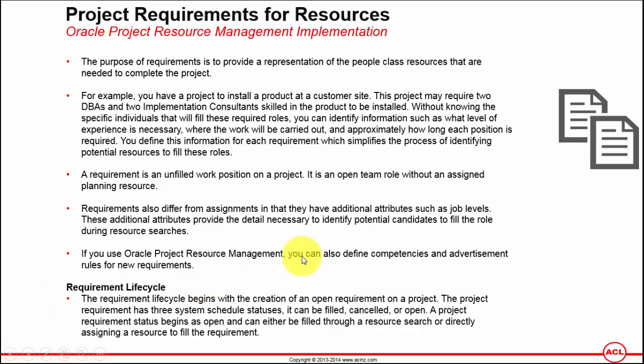The requirement lifecycle begins with the creation of an open requirement on a project. The project requirement has three system schedule statuses: it can be filled, cancelled, or open. The status begins as open and can either be filled through a resource search or directly by assigning a resource to fill the requirement.